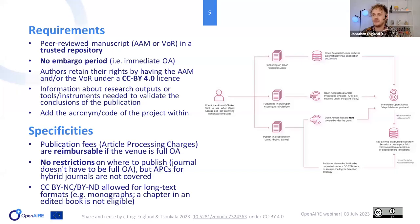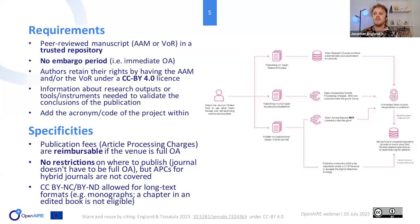Starting with publications — this is quite different from Horizon 2020. You still need to make a version of your manuscript available in open access on a trusted repository. The biggest difference is that you are no longer allowed an embargo — you need to have a version on a repository with immediate open access. Additionally, the version you upload must be licensed under an open license — a Creative Commons Attribution license, also called CC BY — which allows you to retain your rights as authors and make it available without having to ask the publisher.